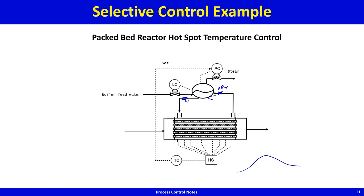The heated water is then depressurized and flashes, so the heat removed from the reactor leaves the system as steam. The typical temperature profile in such cooled packed-bed reactors shows a hot spot that is not stationary — it moves up and down. To track it, a bunch of temperature sensors are placed across the reactor length, and a high selector picks the highest temperature reading.